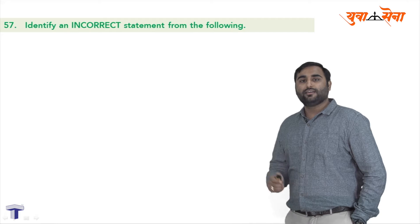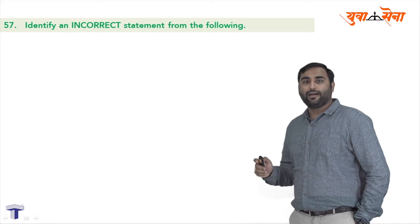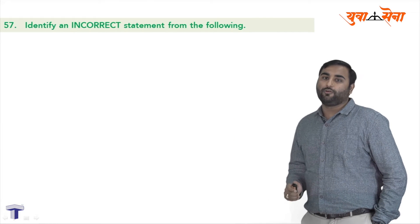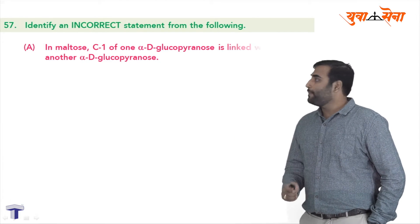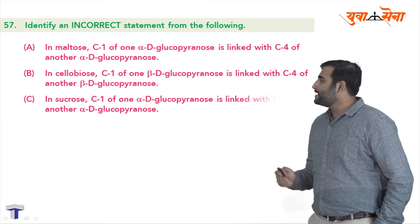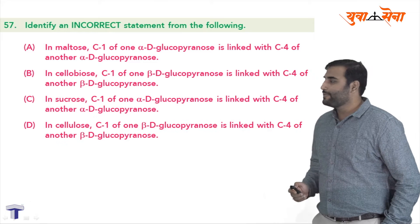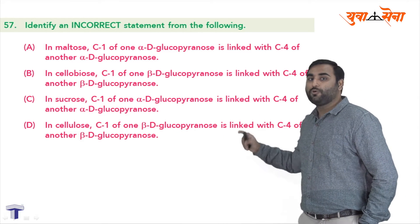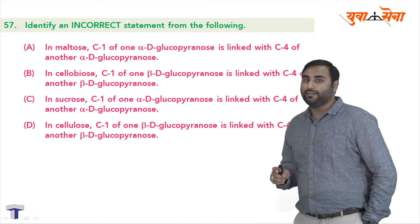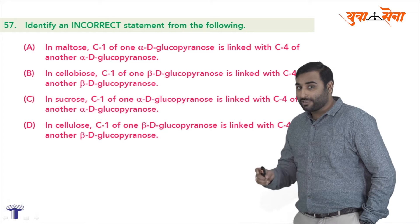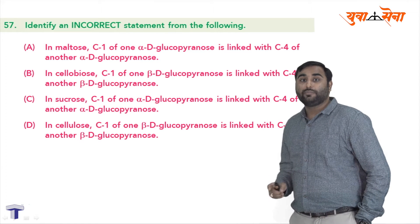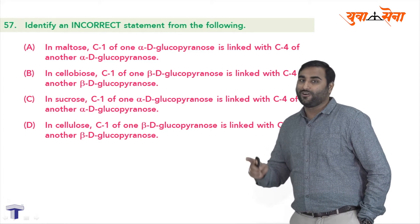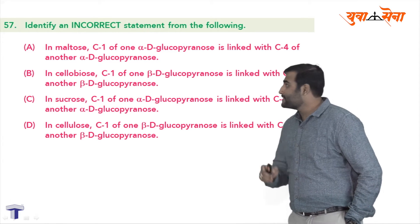The question here is: identify the incorrect statement from the following. So aapke saamne ab chaar statement aayenge — A, B, C, D. Ye chaaro statement mein se aapko incorrect statement dhoondna hai. Iska matlab teen statement correct honge aur ek wrong. So let us see this.